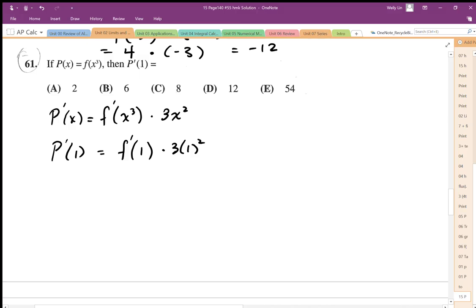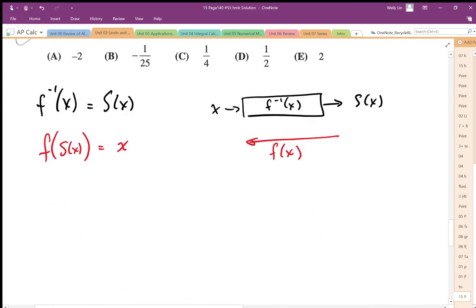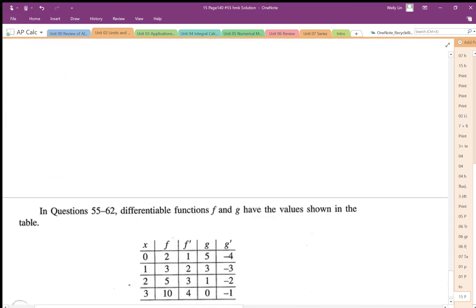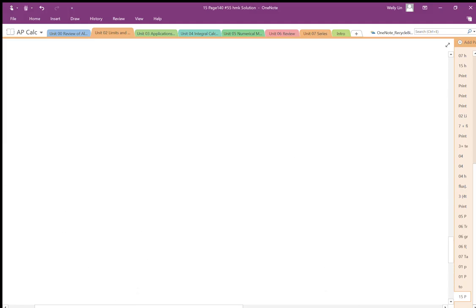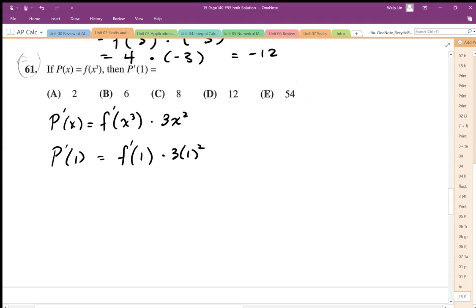Now at this point I still need to use my table because I have my input of 1 and I need my output of f prime. So f prime at x equals 1 is going to be equal to 2. So then going here, I can replace that f prime value with 2 times 3, so the answer is going to be 6.